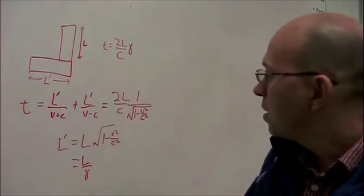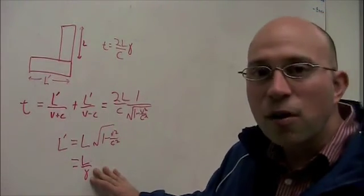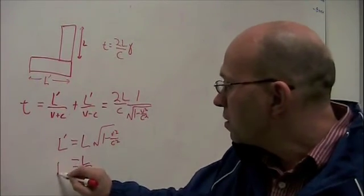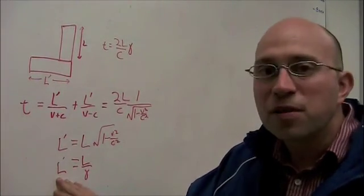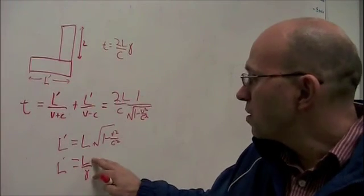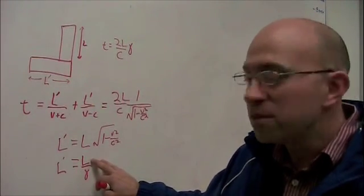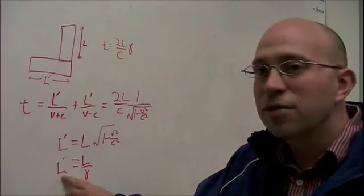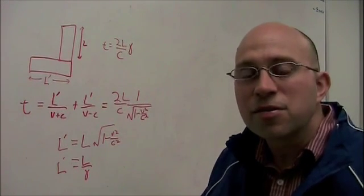Now remember, gamma is a number that's always 1 or bigger. So what this says is that the length of something as measured by the moving observer is equal to the proper length, that's the length measured by the stationary observer, divided by some number bigger than 1. So you get a shorter length if you're a moving observer. And that's length contraction.